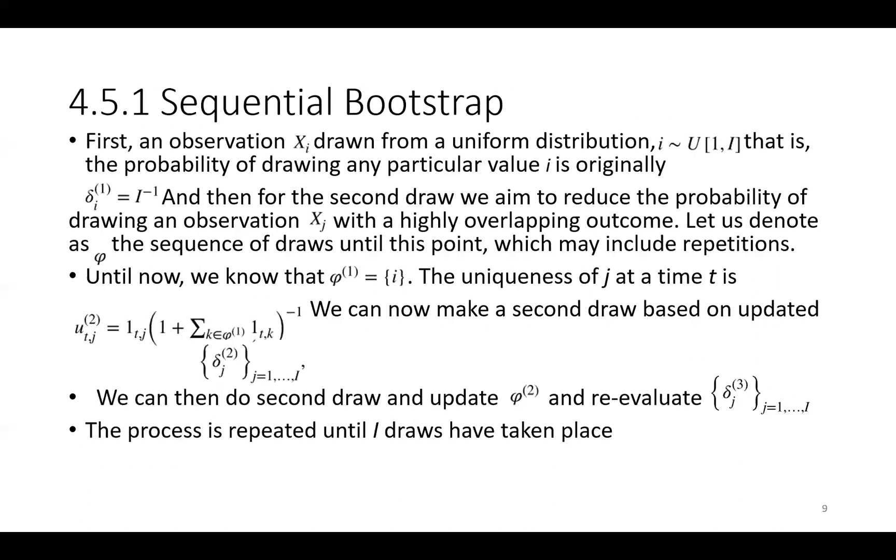So we now move on to the sequential bootstrap method, in which an observation drawn from a uniform distribution between one and I, that is the probability of drawing any particular value is originally 1/I. And then we continue on drawing more draws to reduce the probability of drawing an observation with a highly overlapping outcome. The process is then repeated until I draws have taken place.